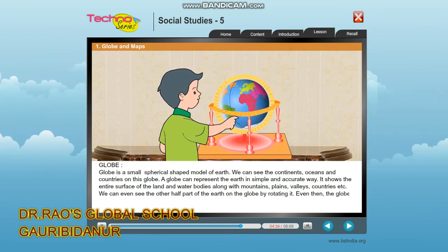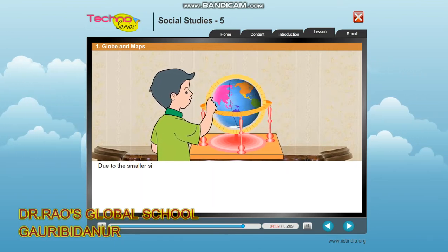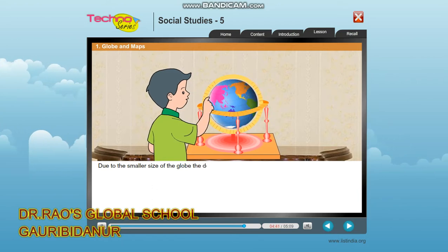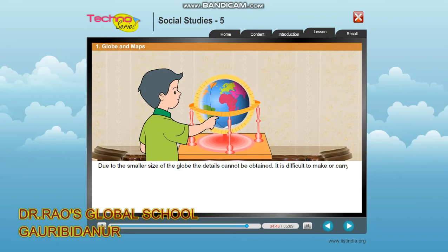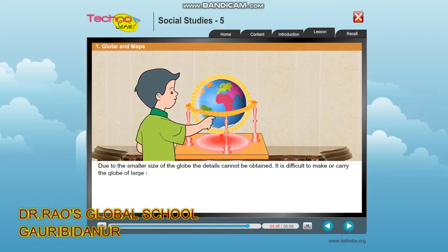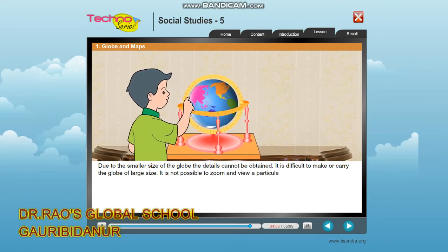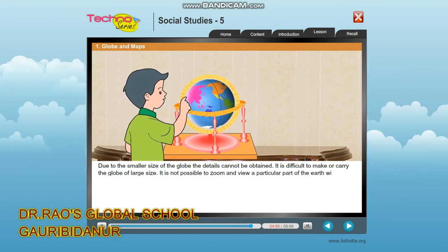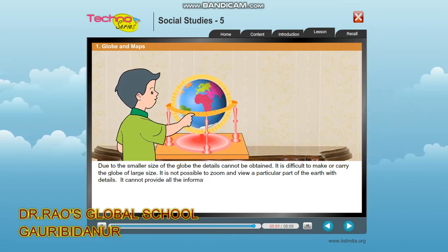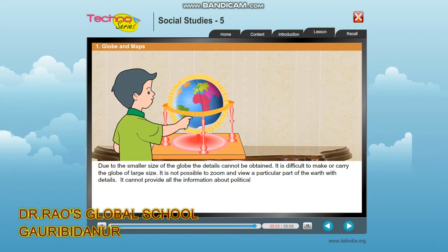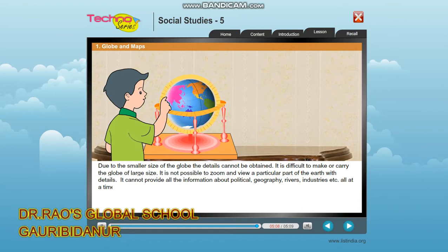Even so, the globe has certain limitations. Due to its smaller size, details cannot be obtained. It is difficult to make or carry a globe of large size. It is not possible to zoom in and view a particular part of the earth in detail. It cannot provide all the information about political geography, rivers, industries, and more, all at a time.